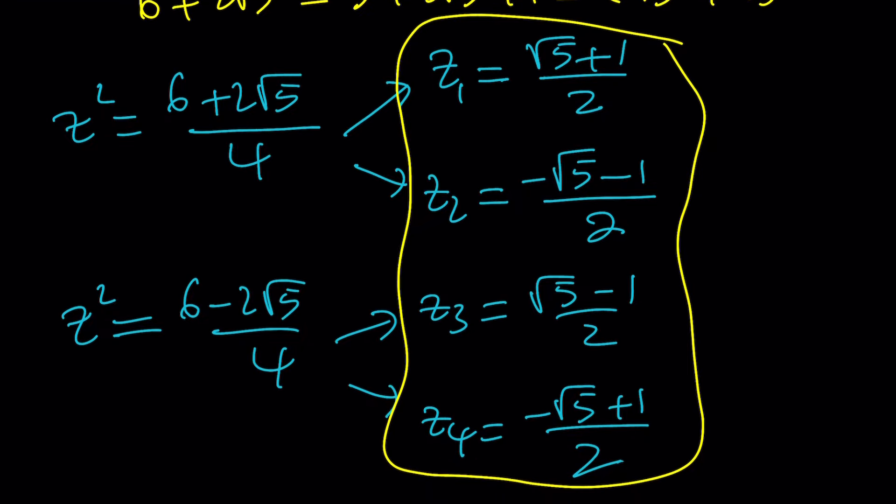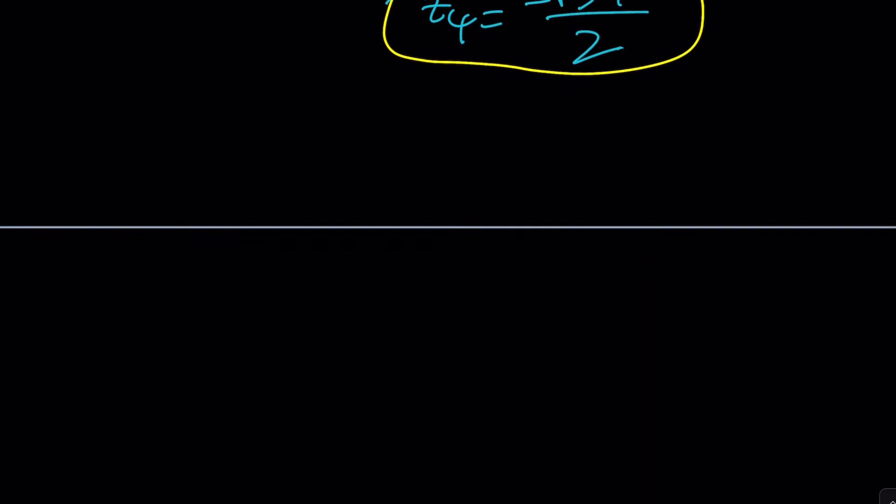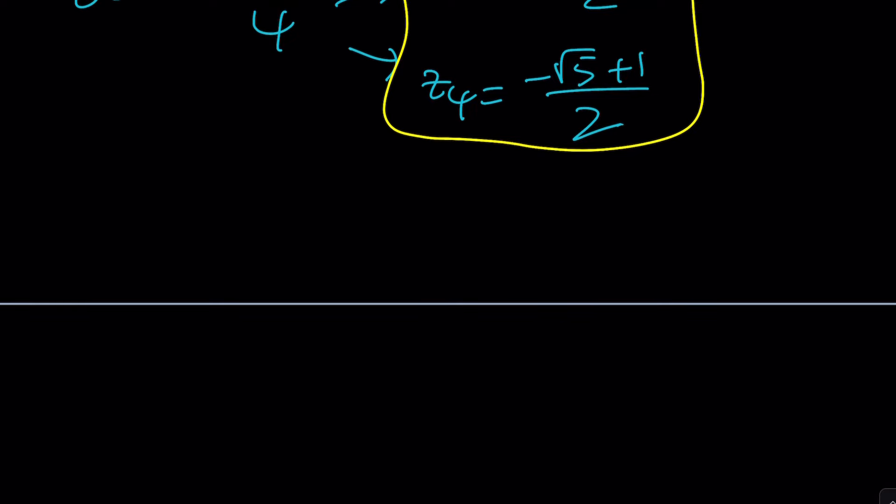Now let's talk about the second method. Obviously the second method uses a different idea. Let's rewrite our equation z to the fourth minus 3 z squared plus 1 equals 0. Now here's what I'm going to do - I notice that this can be written as a difference of 2 squares.